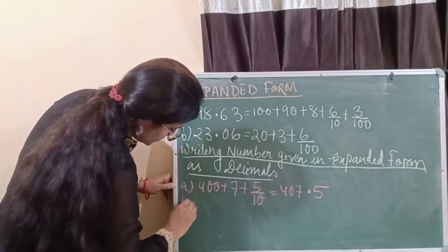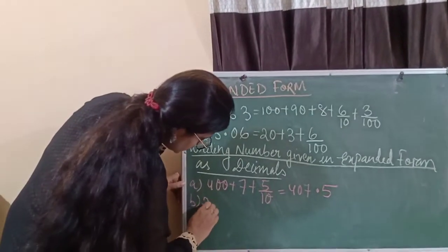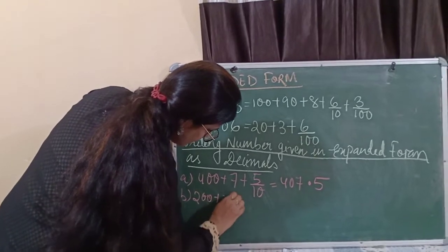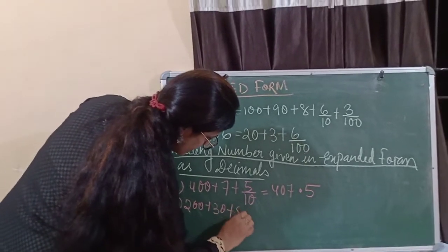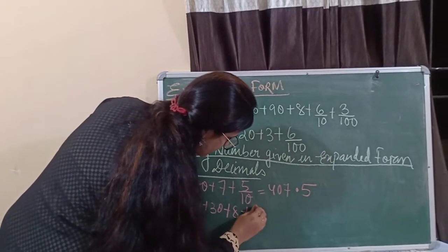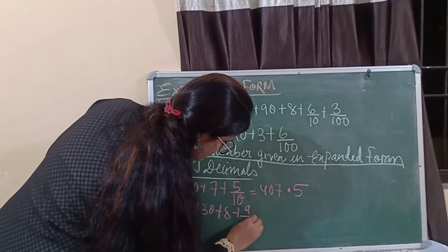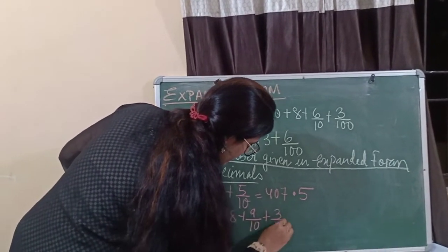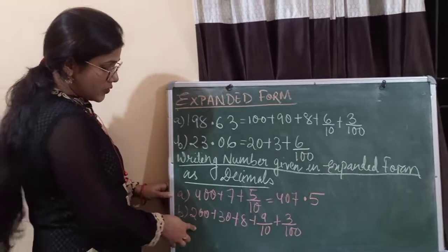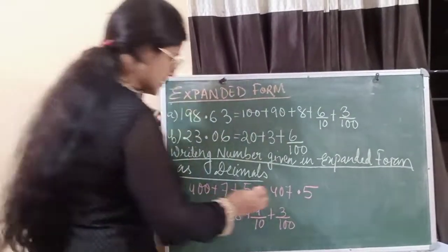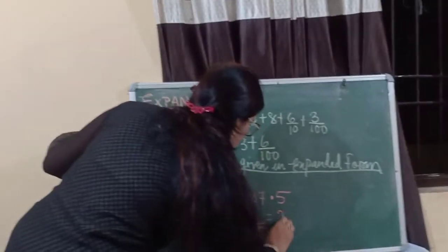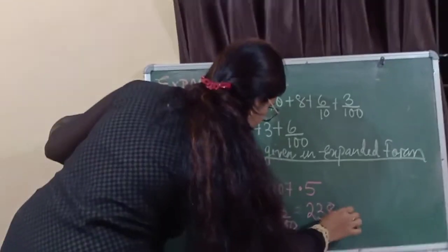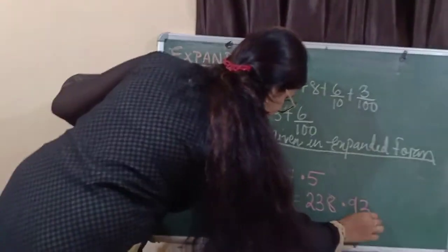Let's take another example. The number is 200 plus 30 plus 8 plus 9 by 10 plus 3 by 100. How can you represent this number in decimal? We will write it as 238.93.